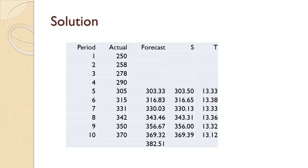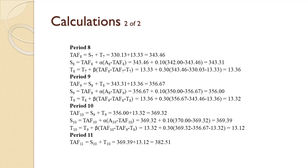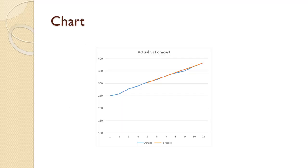A compact solution to the example is shown on the slide. The next two slides show all of the calculations. This slide shows the calculations for periods 5 through 7. This slide shows the calculations for periods 8 through 11. Pause the video and examine them in detail if you made any mistakes. This slide shows a chart of the results. Notice how closely the trend-adjusted forecast tracks the actual data.